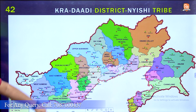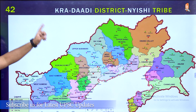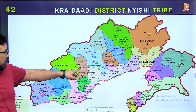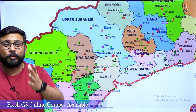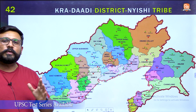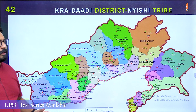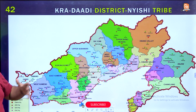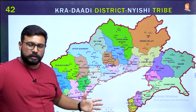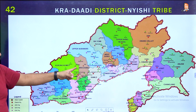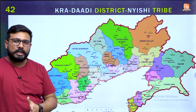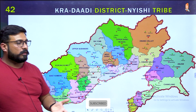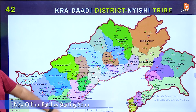The next important district for this year is Kradaya district of Arunachal Pradesh. Very interesting news: in Kradaya district, in the Tali constituency, after independence, road connectivity has reached here for the first time. This becomes important. Additionally, the tribe living in this district is the Nishi tribe — tribe-based location questions are also expected. Kradaya district of Arunachal Pradesh, Nishi tribe, first-time road connectivity in the Tali constituency.